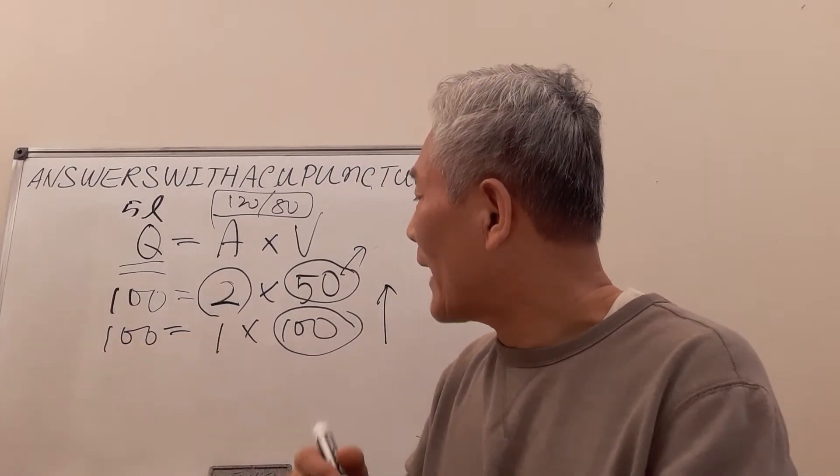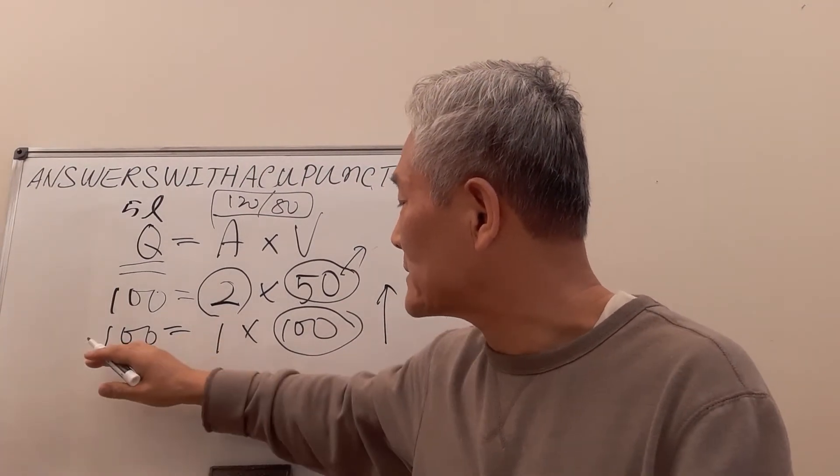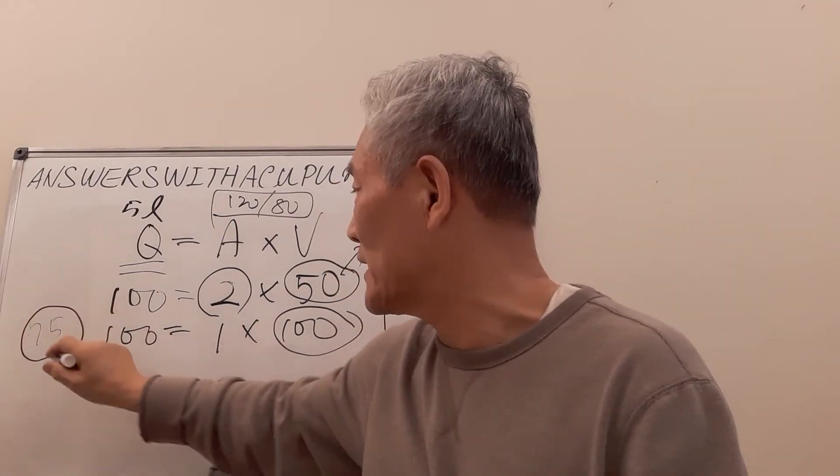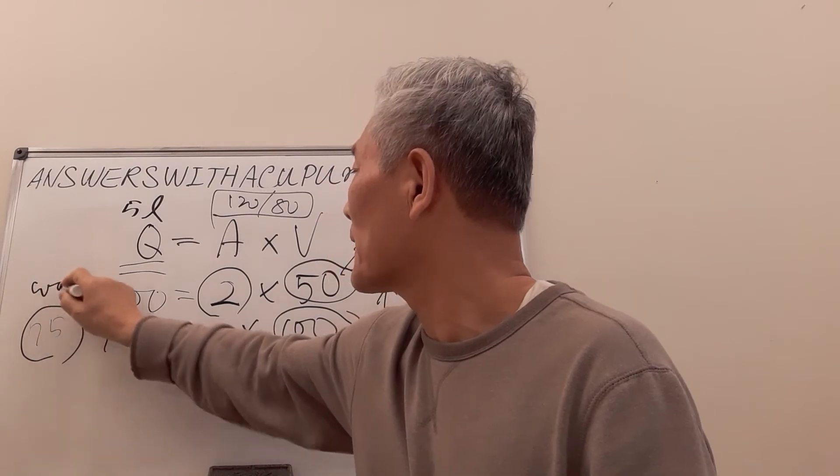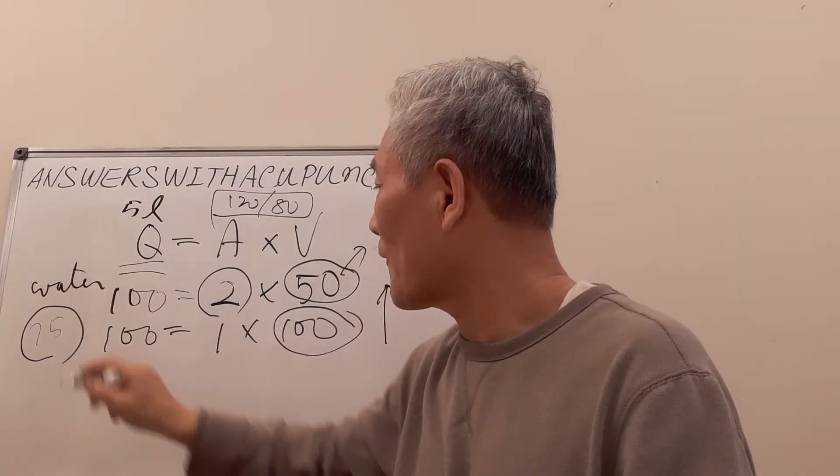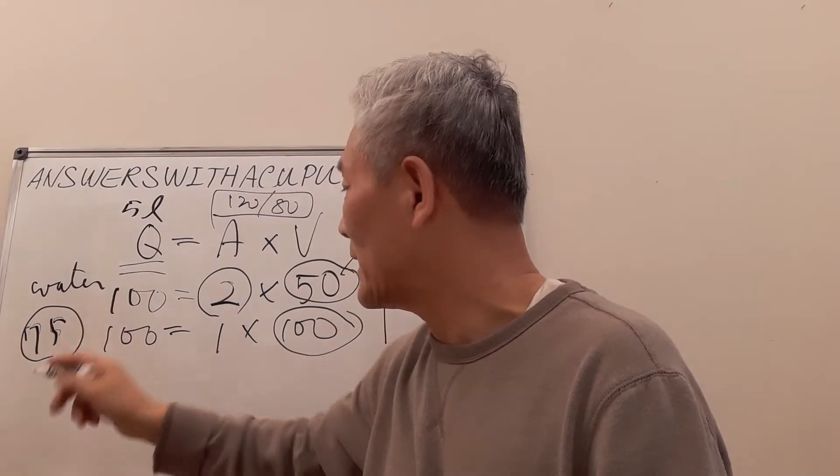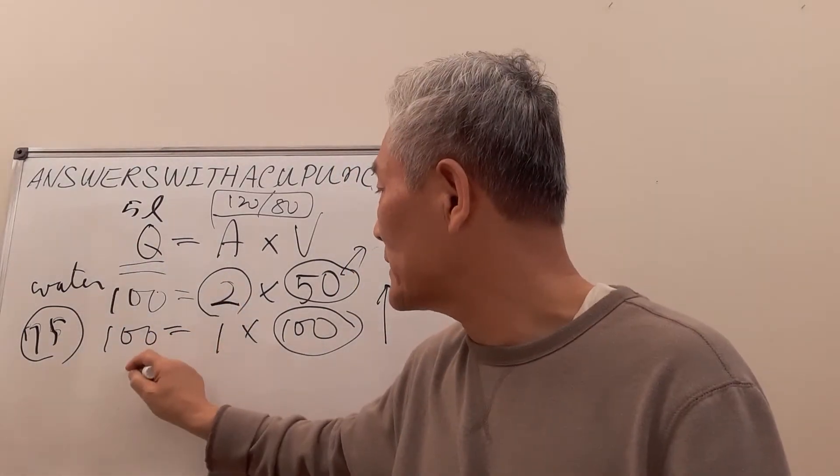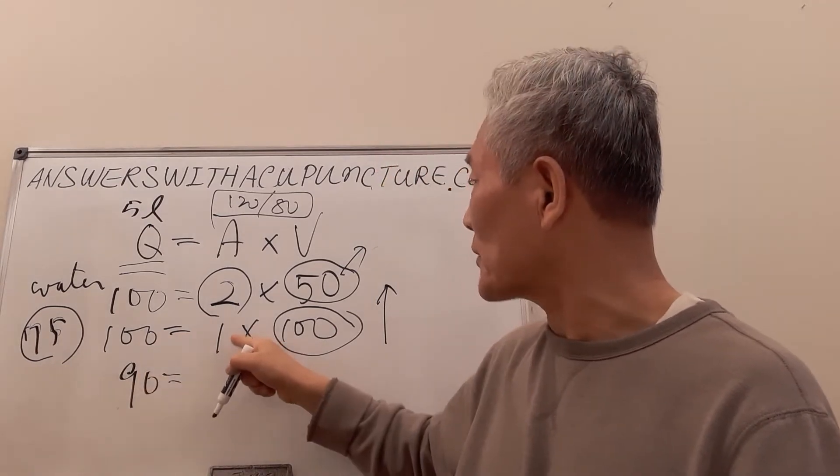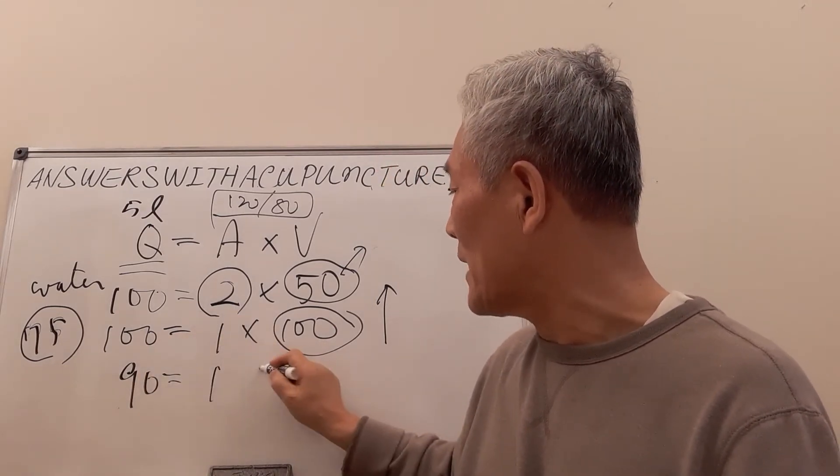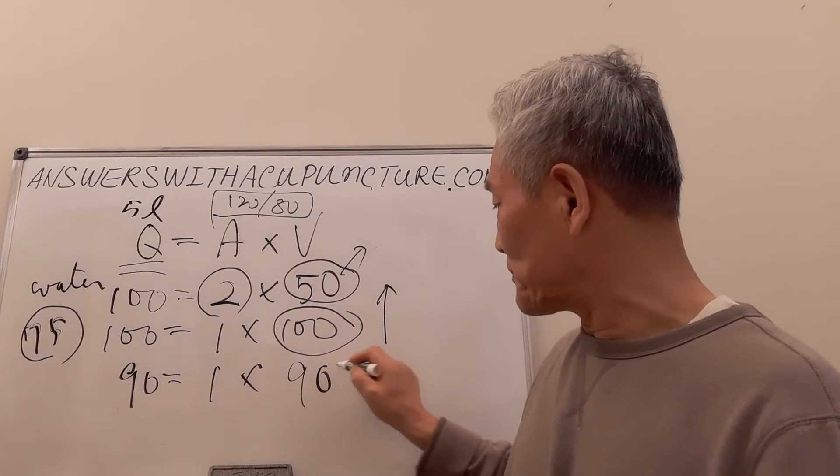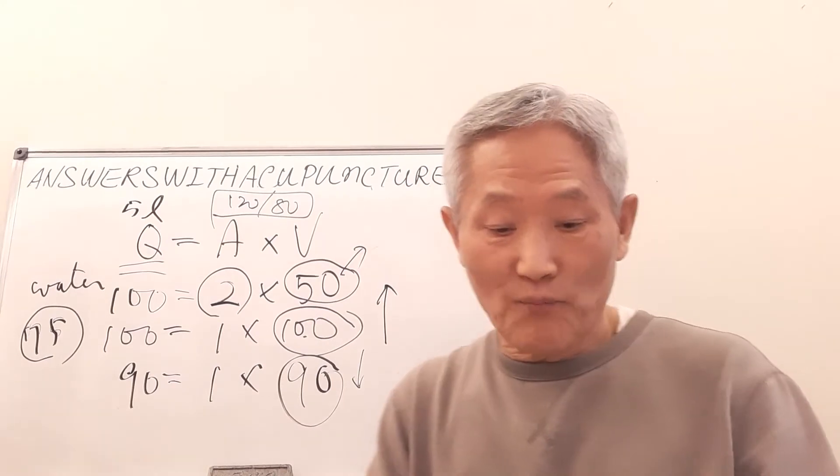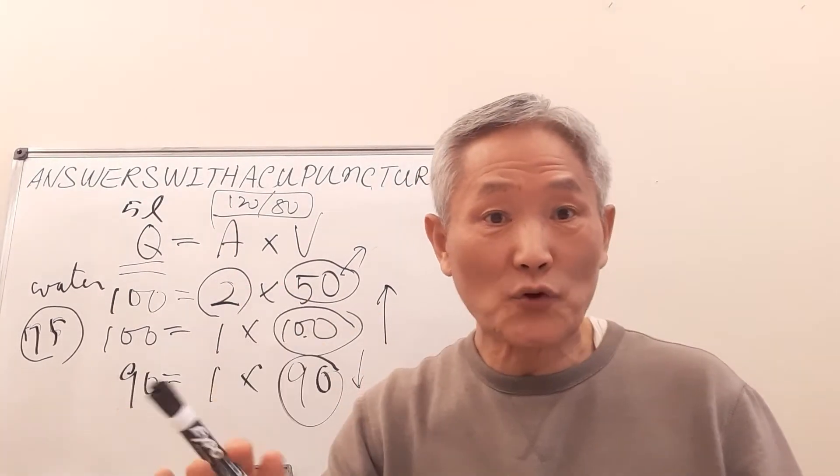Now in 100, 75% (so 75) is water here. So therefore, from 75, let's take out 10 water. Then this becomes 90, right? But the blood vessel is the same, then becomes 90. From 100 to 90 lower, then blood pressure is okay now.